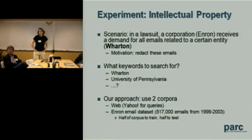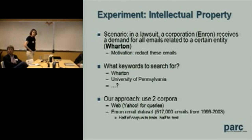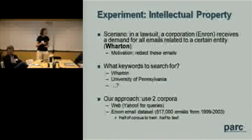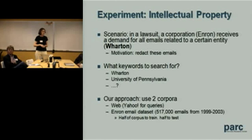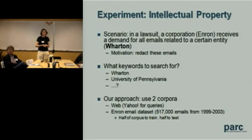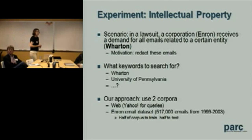Our simulation uses the Enron email dataset — around 500,000 emails sent from Enron during a four-year period. The sensitive topic we used, very artificially, is Wharton. Imagine you're Enron and for some reason don't want to reveal you have a relationship with the Wharton School of Business. What keywords do you use to flag emails going out? You can certainly look for 'Wharton,' and maybe you know it's at the University of Pennsylvania, so you look for that. But pretty quickly you run out of ideas.